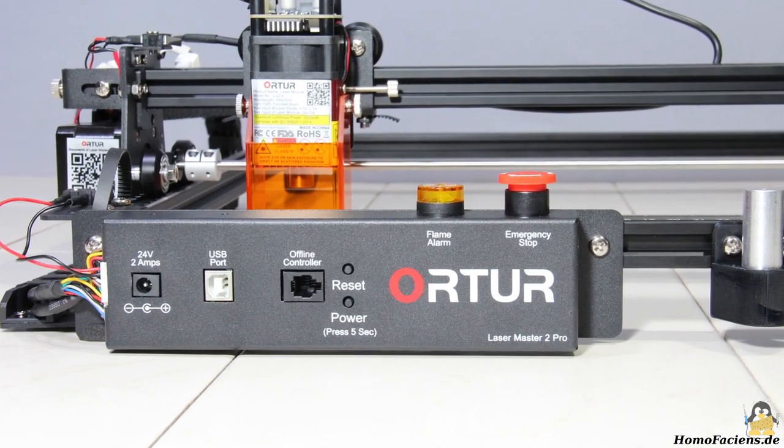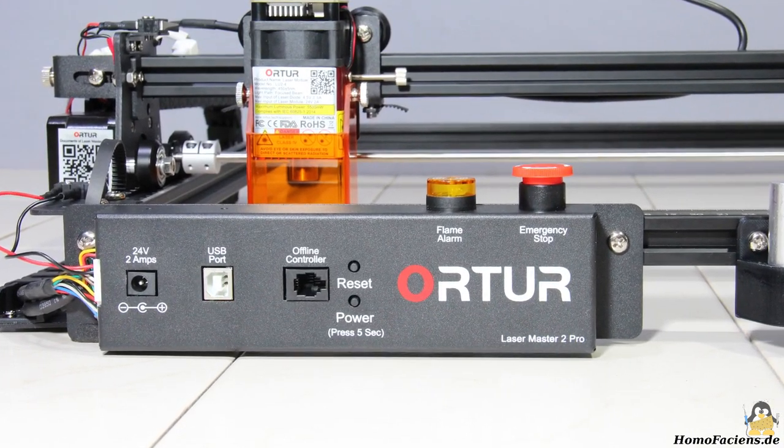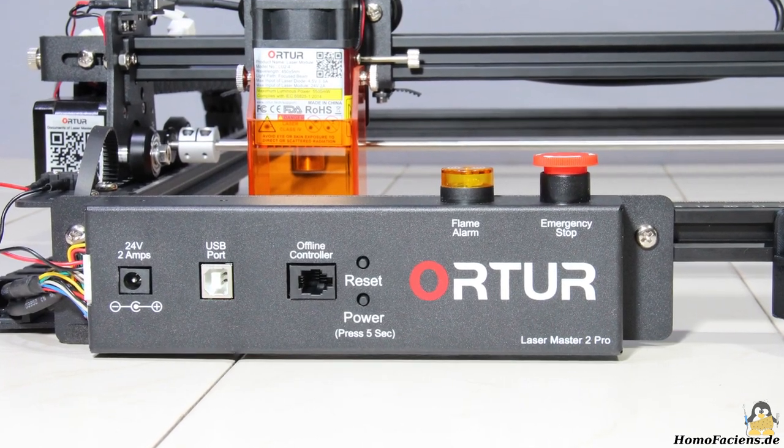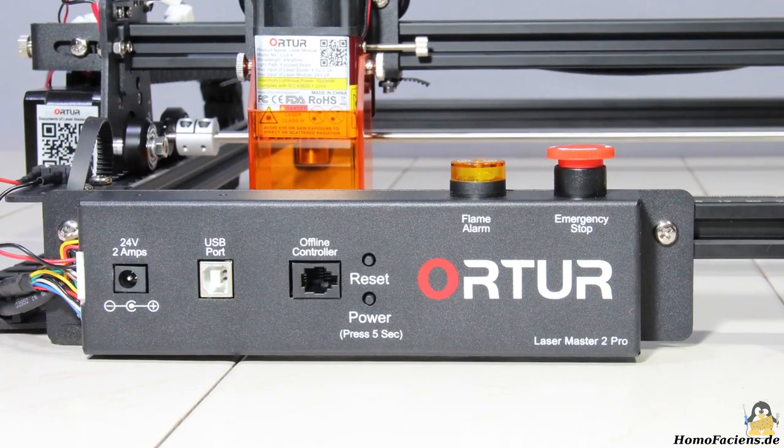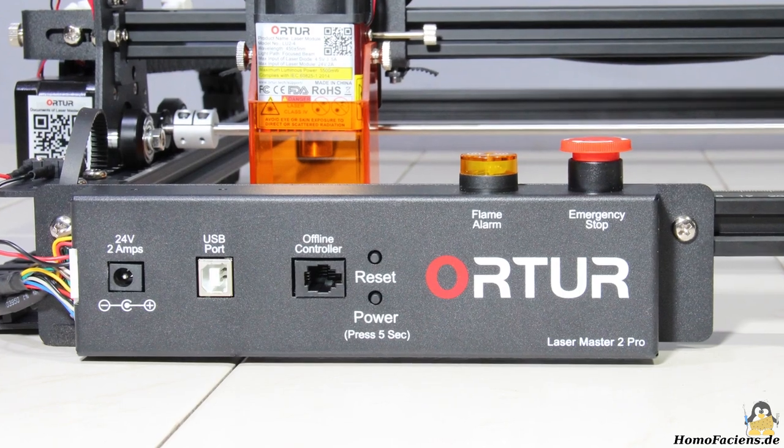Data is transferred to the circuit board via an USB interface. An external controller for manually moving the two axes, which is available as an extra, can be connected to the second socket.